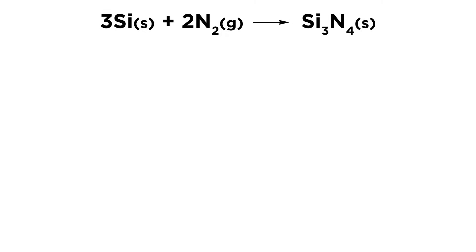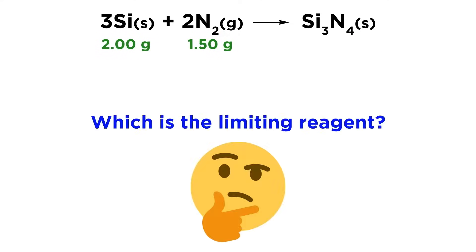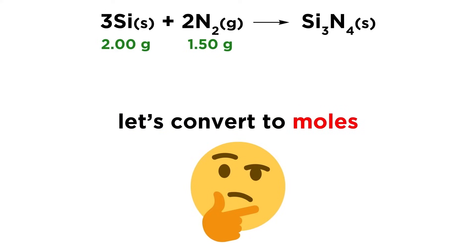Let's apply this to some real chemistry. Silicon nitride, which is a solid, is produced according to this equation involving solid silicon and nitrogen gas. If we have 2 grams of silicon and 1.5 grams of nitrogen, which will be the limiting reagent? Well the grams tell us nothing, we have to convert to moles.